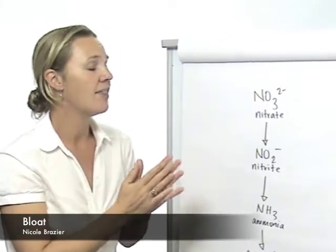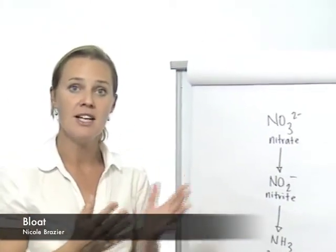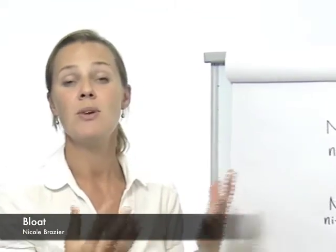Another contributing factor to bloat is the slime that is produced in the rumen when certain plant components are fermented. One of the enzymes in DFM, beta-glucanase, actually plays a key role in reducing the amount of slime produced. This means that the foam produced — those tiny bubbles — is less stable, so the gas is more able to escape. So beta-glucanase plays a second role in helping prevent bloat.